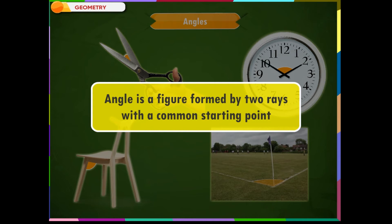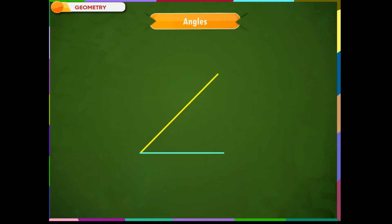Angle is a figure formed by two rays with a common starting point. The two rays forming the angles are called the arms or the sides of the angle. The common starting point is called the vertex of the angle.